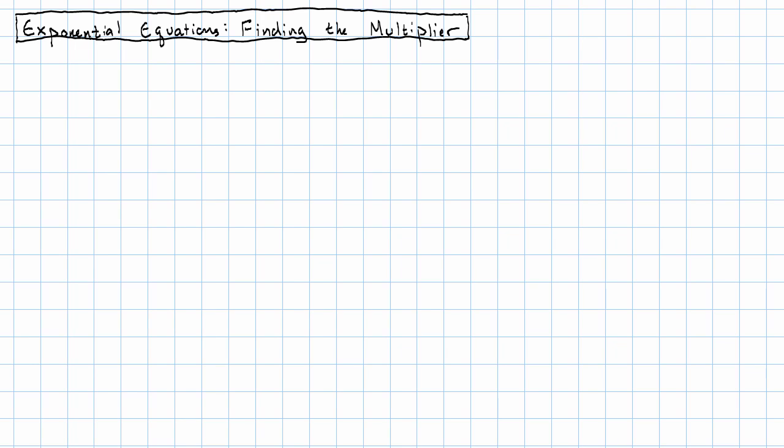Sometimes, the information that we're given in a problem makes it easiest to find the multiplier involved just by solving an exponential equation.